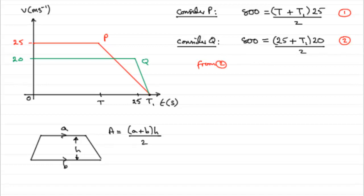We could do a bit of cancelling here. This 2 cancels into the 20 ten times, and if we divide both sides now by 10, you're going to get 800 divided by 10 gives us 80, and that's going to leave us with 25 plus T1. And so if we take 25 from both sides, we end up with T1 equaling 80 minus 25, which is 55.